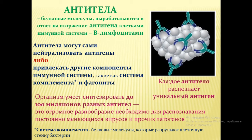Остановимся на антителах, вырабатываемых B-лимфоцитами. Это белковые молекулы, которые вырабатываются в ответ на антиген. Чем старше человек, тем больше видов антител: их может быть до 100 миллионов различных видов. Это огромное разнообразие, необходимое для распознавания постоянно меняющихся вирусов и патогенов. Антитела могут сами нейтрализовать антигены либо привлекать другие компоненты иммунной системы — систему комплемента и фагоциты. Каждое антитело распознаёт уникальный антиген.